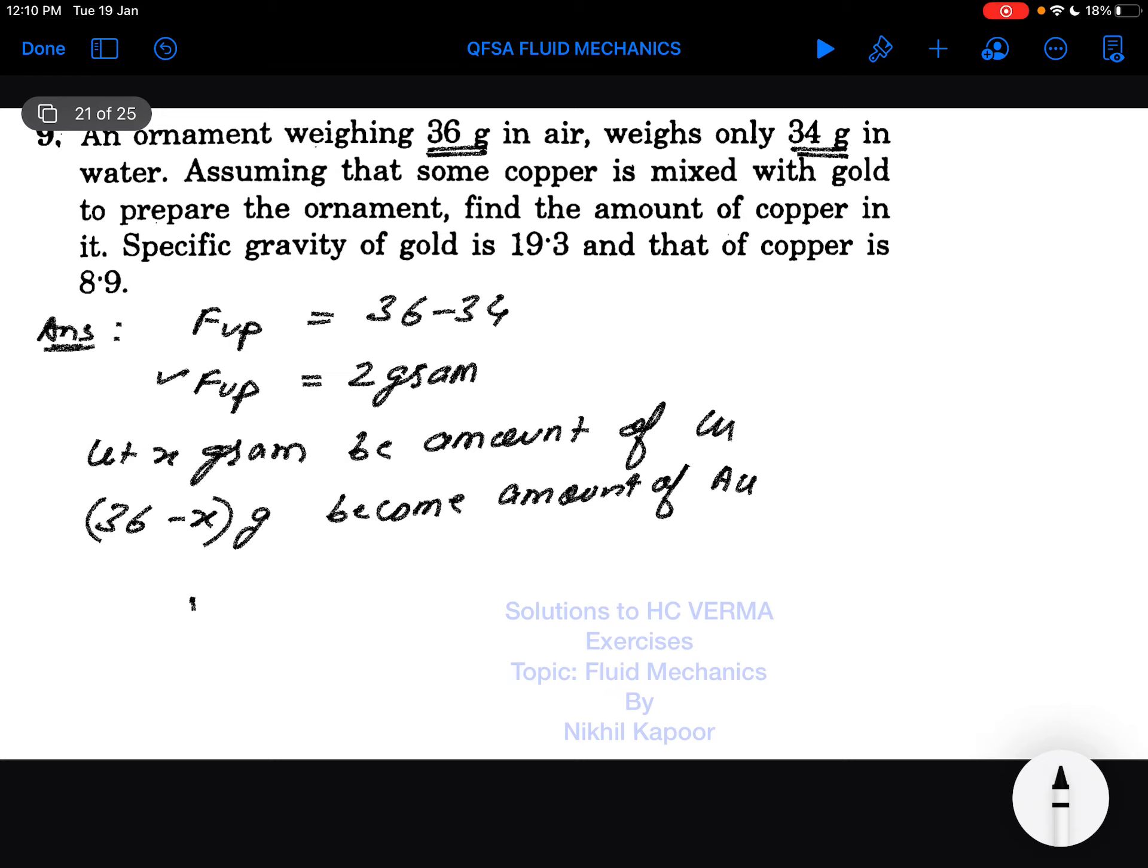As upthrust equals volume of body times density of liquid, which equals 2 grams, this volume would be volume of copper plus volume of gold multiplied by density of water, which is 1 gram per centimeter cube in CGS units.